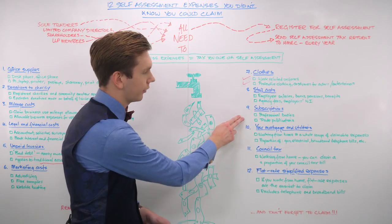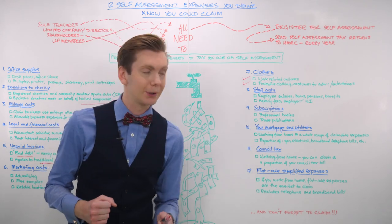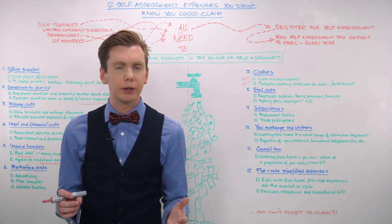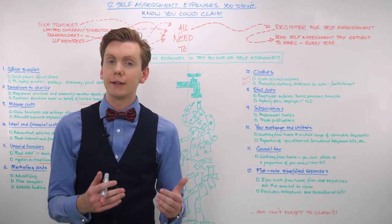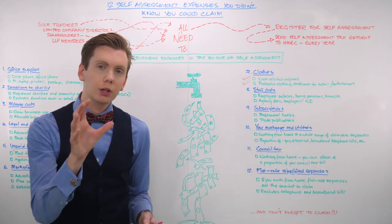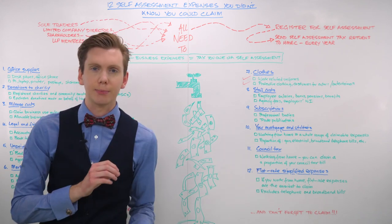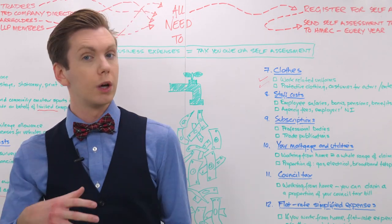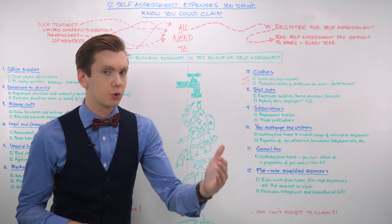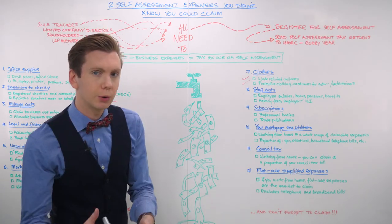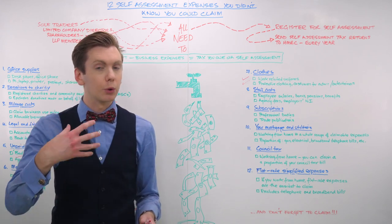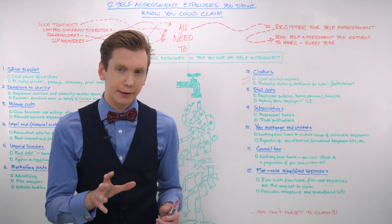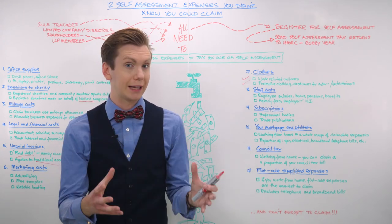The ninth self-assessment expense that you might not know you can claim is subscriptions. If you are subscribed to any professional bodies or trade publications that directly feed into your job, then you can claim the costs of those subscriptions as self-assessment expenses. Permitted expenses include a subscription to any trade professionals or academic journals. Likewise, a subscription or annual membership to a professional organisation or union will also apply as a permitted expense.